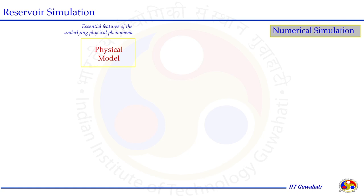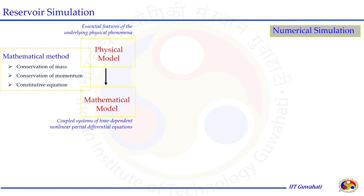The physical model captures the essential features of the underlying physical phenomena. This physical model needs to be converted into mathematical language — a coupled system of time-dependent nonlinear partial differential equations — by applying conservation laws. The mathematical model includes conservation of mass, conservation of momentum, constitutive equations for physical properties, equation of state, and other relationships required to define the physical system.